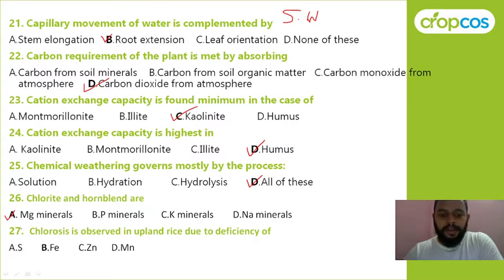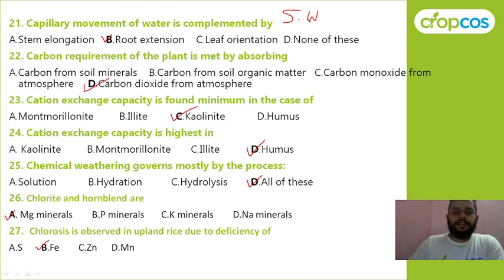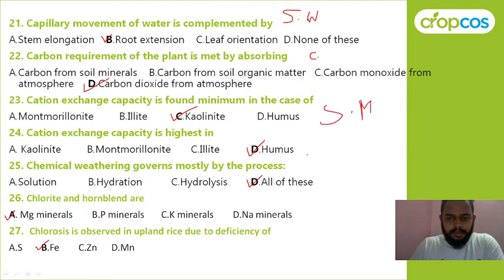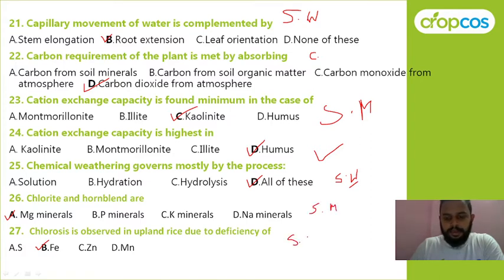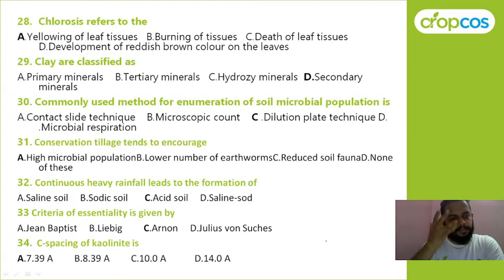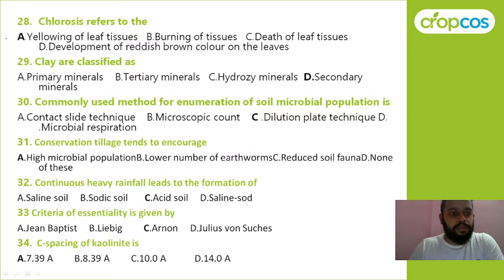Chlorosis is observed in plants due to deficiency of sulfur, iron, zinc, or manganese? The answer is iron. Next: chlorosis is referred to as yellowing of leaves, burning of leaf tissues, death of leaf tissues, or development of reddish brown color on leaves? Correct answer is A — yellowing of leaves.